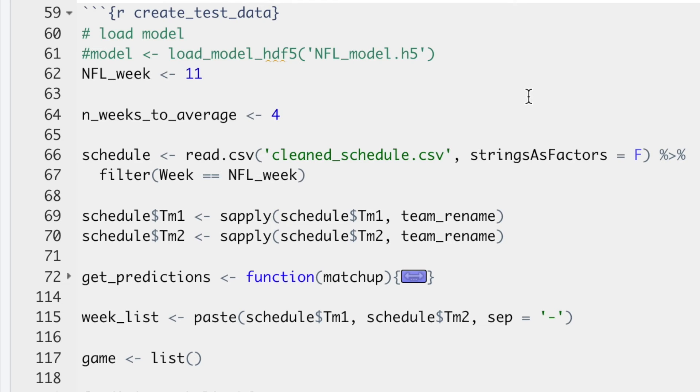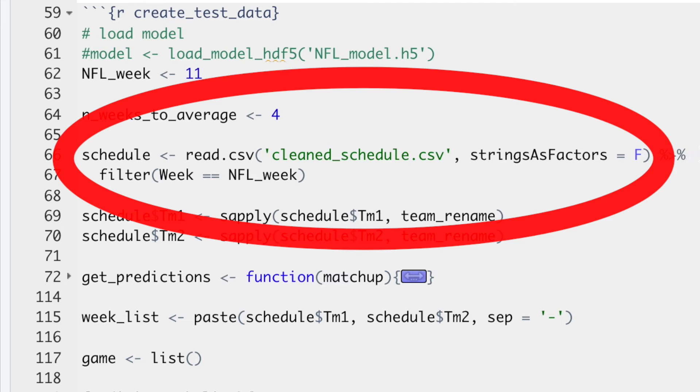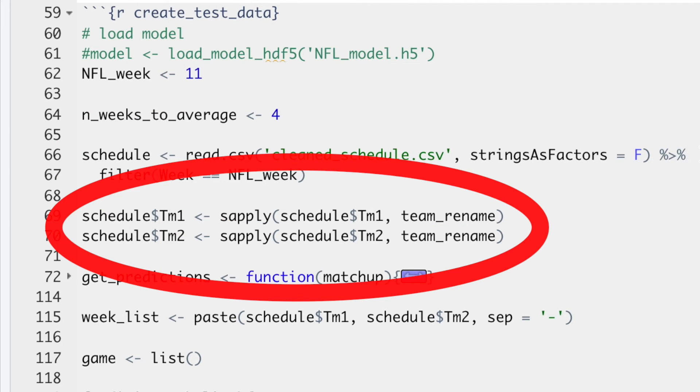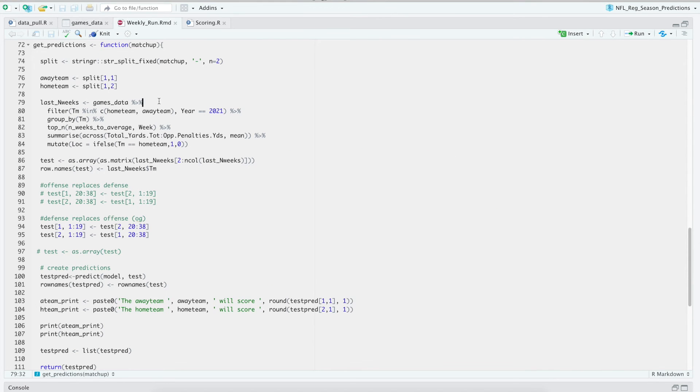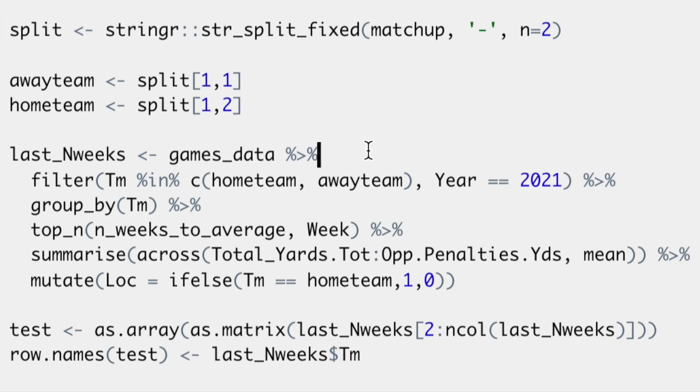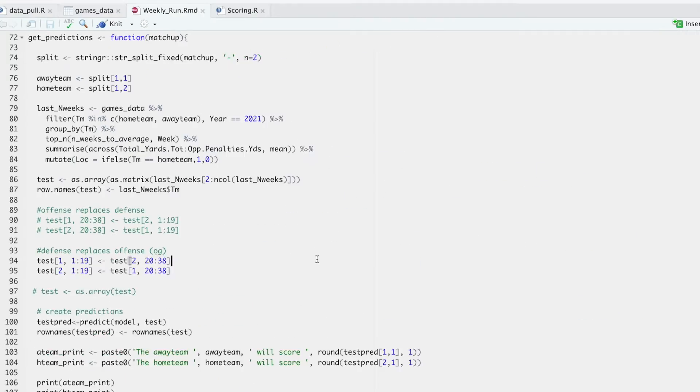So we're going to take a file that has the schedule of all the NFL games for 2021, clean it up a bit, and get the matchups for the week. I created this function that takes the matchup for the week and averages the last n weeks of data for each team. Then our testing data frame has two rows, one for each team in the matchup.